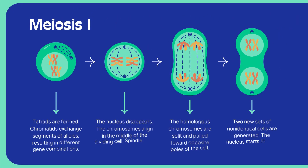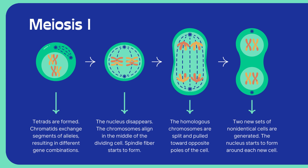Meiosis I. Tetrads are formed. Chromatids exchange segments of alleles, resulting in different gene combinations. The nucleus disappears. The chromosomes align in the middle of the dividing cell. Spindle fibers start to form. The homologous chromosomes are split and pulled toward opposite poles of the cell. Two new sets of non-identical cells are generated. The nucleus starts to form around each new cell.